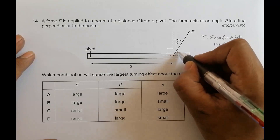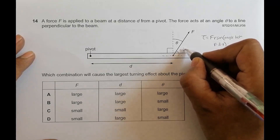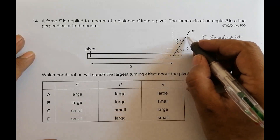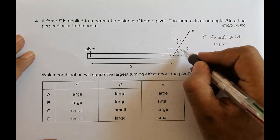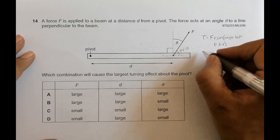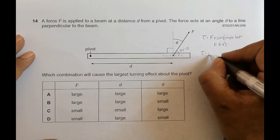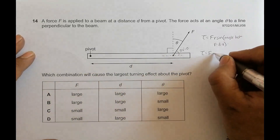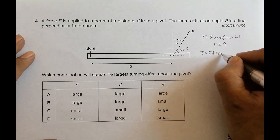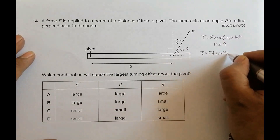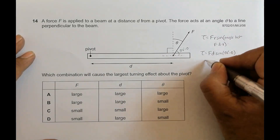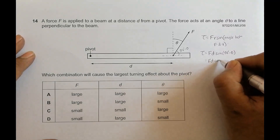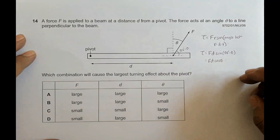The angle between the direction of R (which is D here) and F should be equal to 90 degrees minus theta, because theta is the angle between the force and the perpendicular. So the torque becomes F times D times sine(90° − θ), which simplifies to F·D·cos(θ).